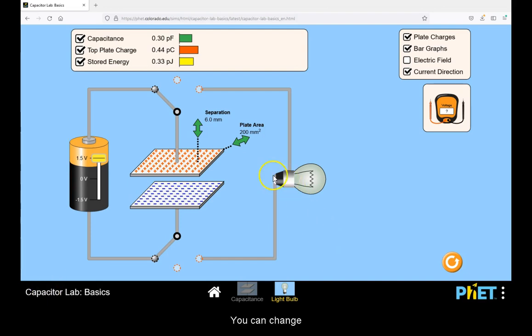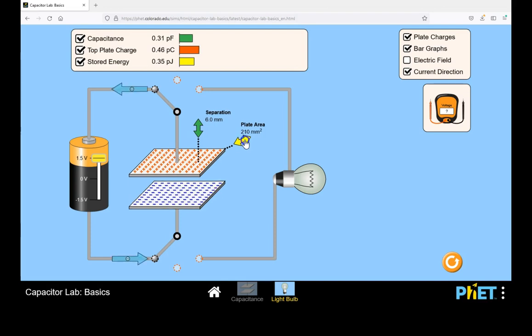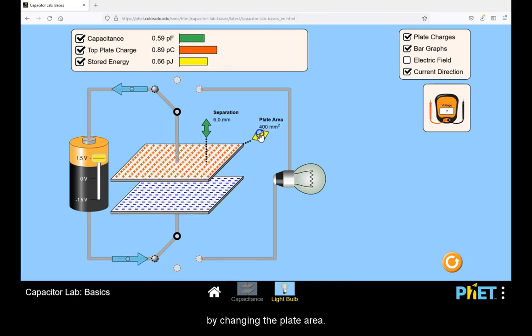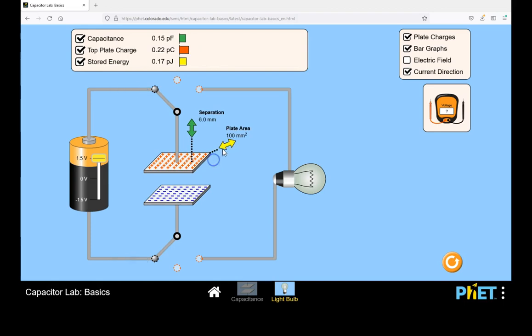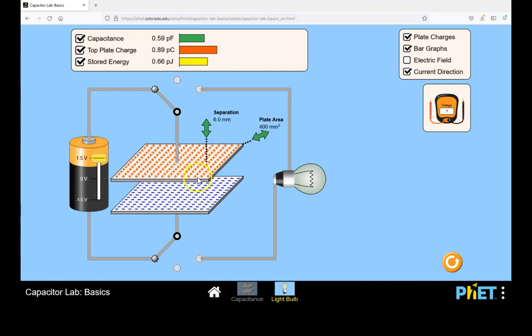You can change the capacitance and hence total charge by changing the plate area. The greater the plate area, the more charges you will have available.